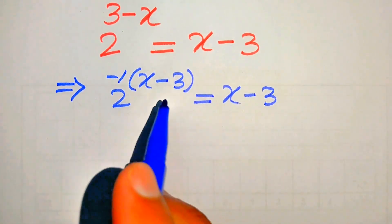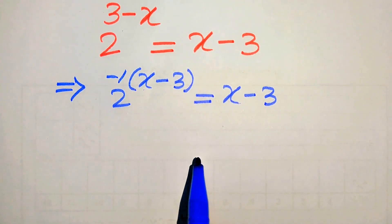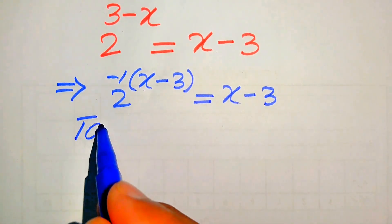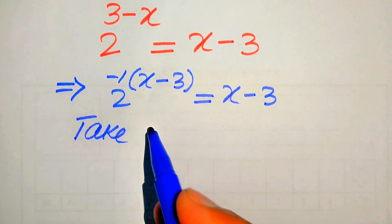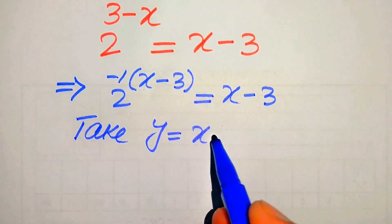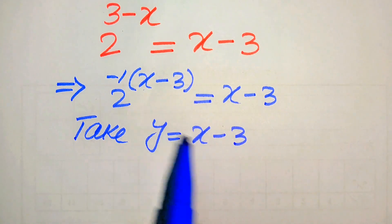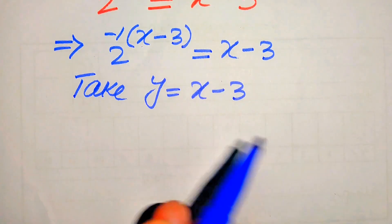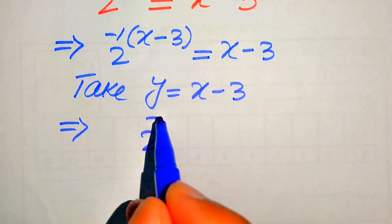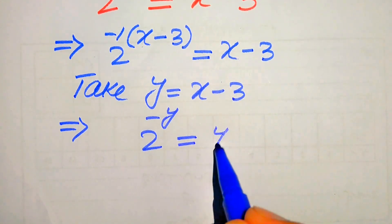Now you can see that both sides involve the term (x minus 3). In order to simplify this, we let y equal x minus 3. When we substitute this value on both sides of the equation, it becomes 2 to the power of (minus y) equals y.